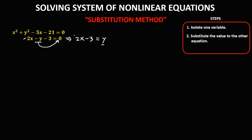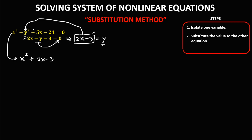Then substitute the value into the other equation. Since y equals 2x minus 3, we substitute 2x minus 3 into the second equation. This becomes x squared plus (2x minus 3) squared, then minus 5x minus 21 equals 0.